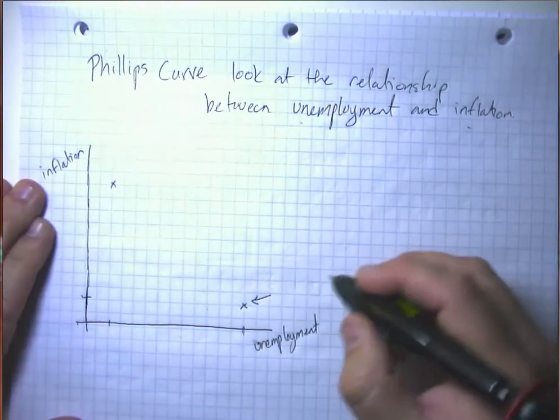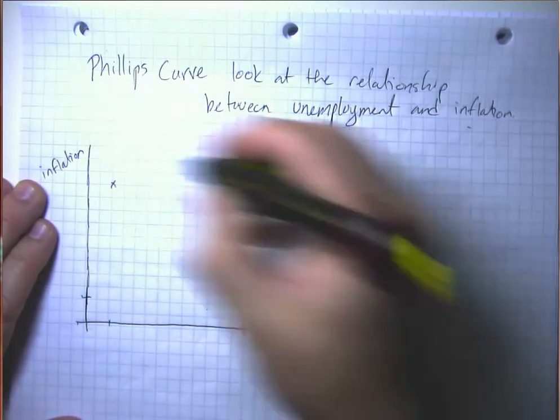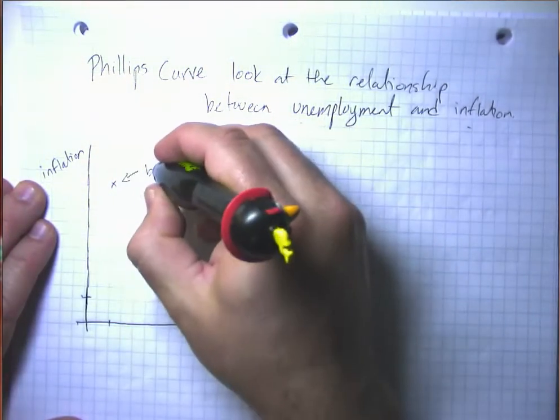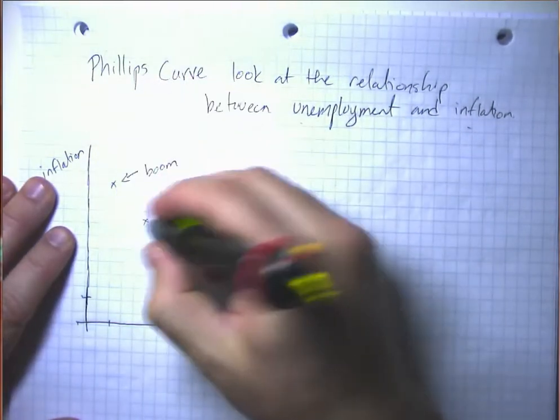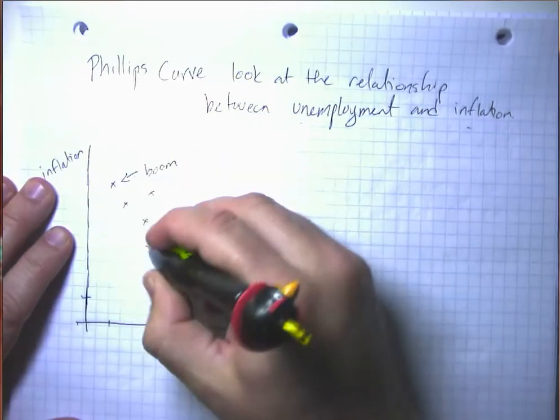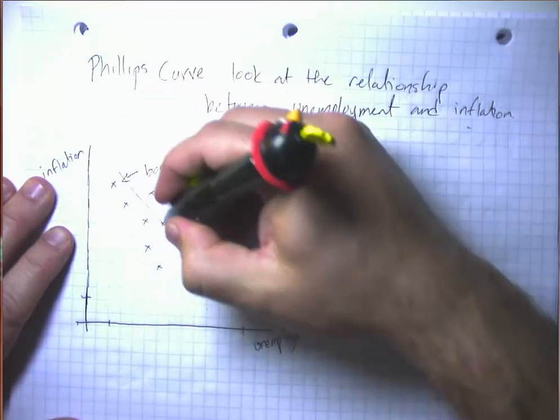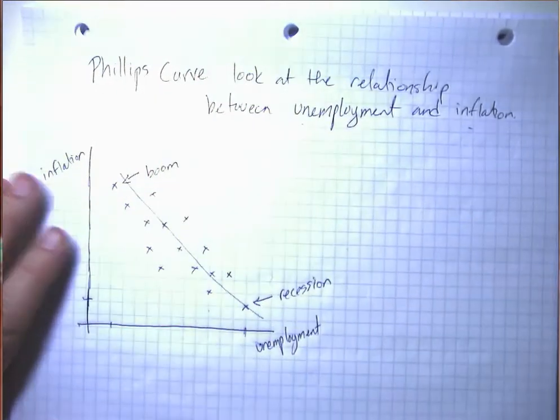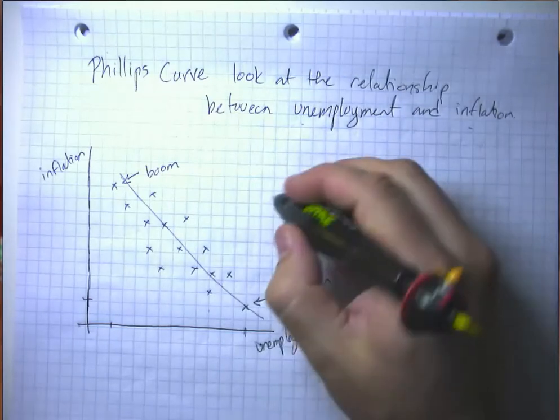And roughly, this point over here corresponds to a recession, and this point over here corresponds to some kind of boom. And, you know, there might have been a whole series of different observations here. And the Phillips Curve would be the line that passes best through that cloud of points.